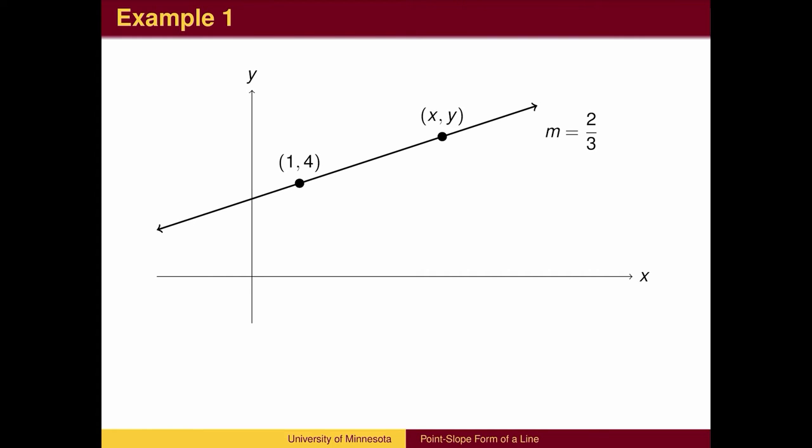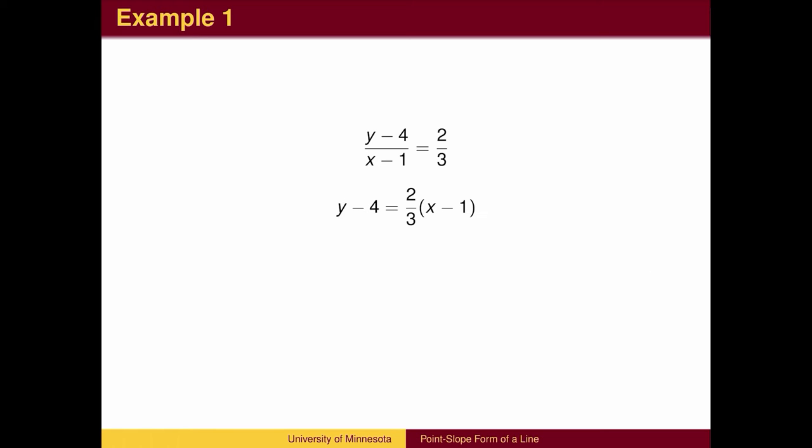We will use the ordered pair to denote an arbitrary point on the line. We know the slope of the line is 2/3 and can write a general formula for slope by subtracting coordinates. We can simplify this equation by multiplying both sides by x minus 1. This form is called point-slope form.